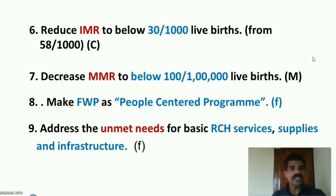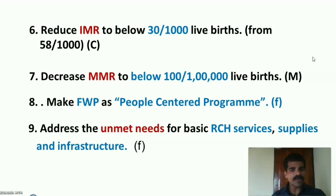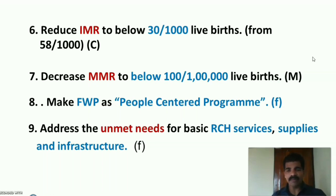Goal 6 – Reduce infant mortality rate to below 30 per 1000 live births by 2010 (from 58 per 1000). Goal 7 – Decrease maternal mortality rate to below 100 per 1 lakh live births by 2010. Goal 8 – Make the family welfare program a people-centered program. Goal 9 – Address the unmet needs for basic RCH services, supplies, and infrastructure.